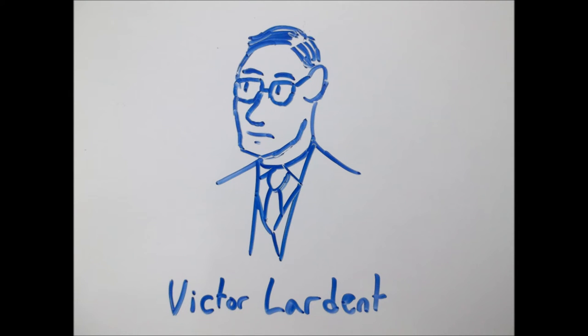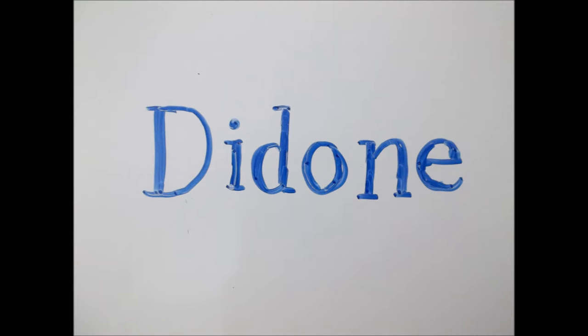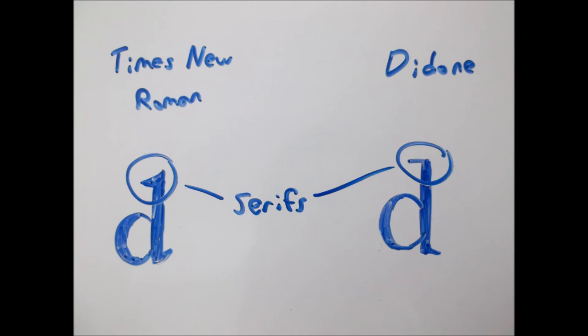In 1931, a designer named Victor Lardent was commissioned by the London newspaper The Times to create a new, more interesting font to replace the antiquated-looking didone. So using the power of typography, Lardent's Times New Roman had smaller serifs, which are the decorative little notches on letters.